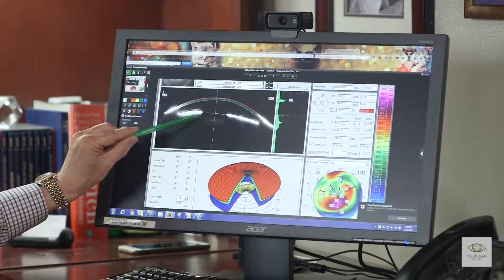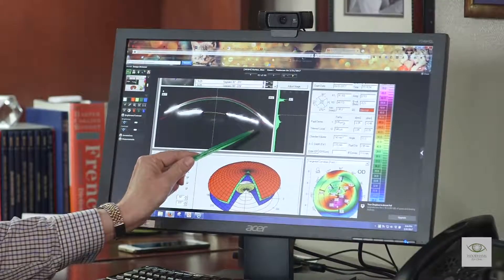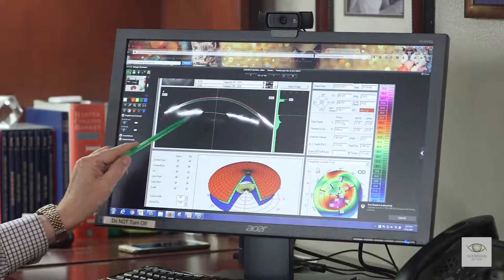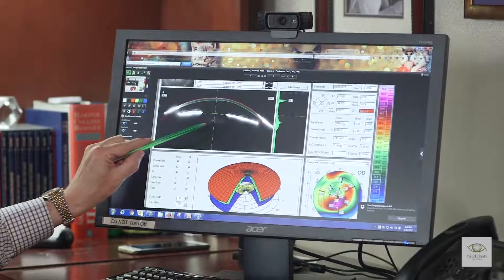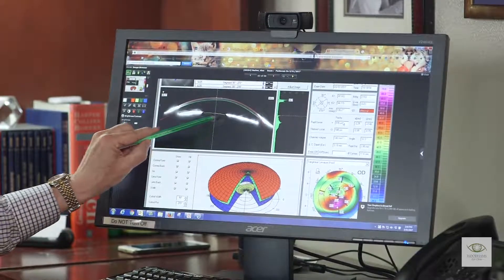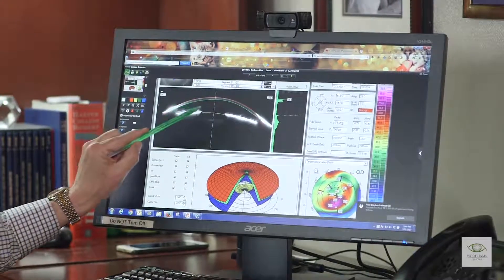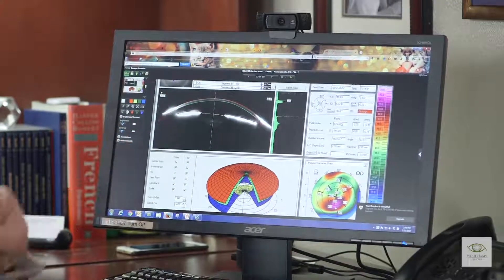But as you can see in this part of the lens—remember the lens goes completely across—we're starting to develop these layers of clouding, of hazing. That's the hardening of the lens, that's the presbyopia itself.